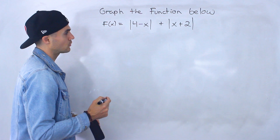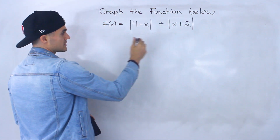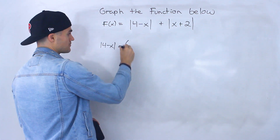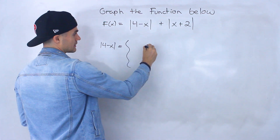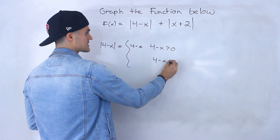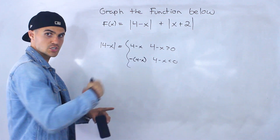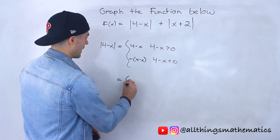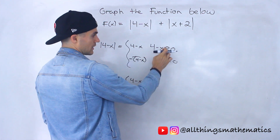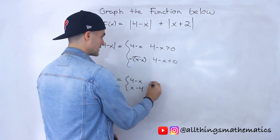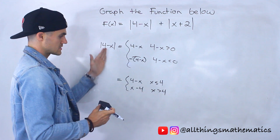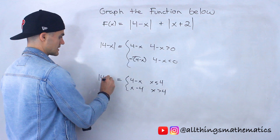Converting it to a piecewise function takes a bit more work because we've got to deal with these separately. So first I'm going to take the absolute value of 4 minus x and change that to a piecewise function. If 4 minus x is greater than or equal to 0, it stays as that expression. But if 4 minus x is less than 0, we multiply by negative 1. Simplifying: 4 minus x when x is less than or equal to 4, and x minus 4 when x is greater than 4.